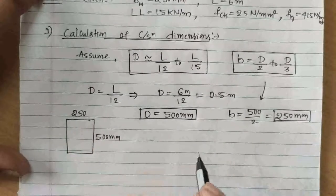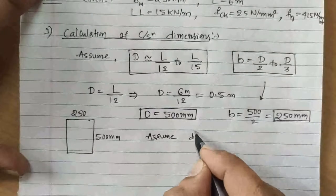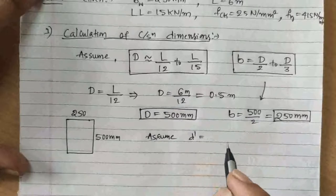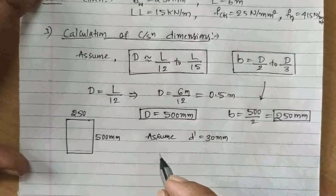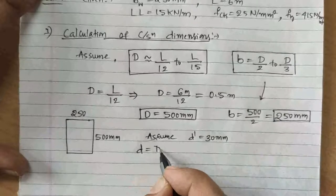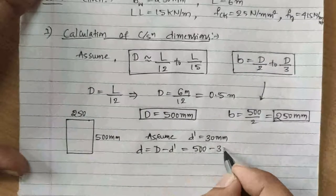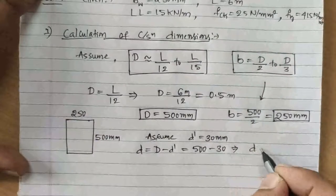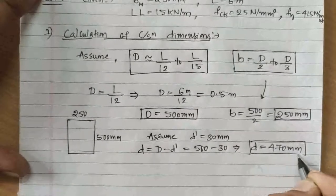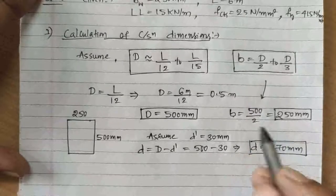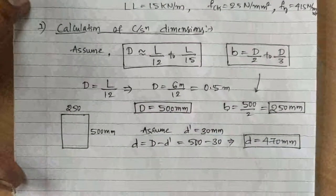To calculate the effective depth, assume a cover of 30 mm. Effective depth d = D − cover = 500 − 30 = 470 mm. So we have b = 250 mm, D = 500 mm, and d = 470 mm.